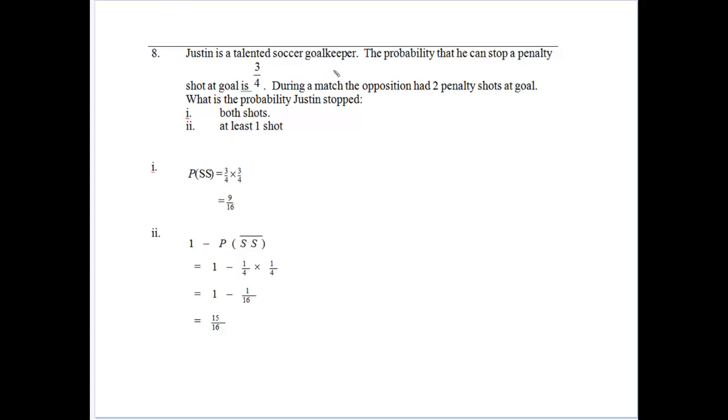This time we've got Justin being a goalkeeper and the probability that he stops a penalty shot is three quarters. And if he's in a game that has two penalty shots to stop, what's the probability that he stops both? Well, that's he stops the shot and he stops the shot. Got 9 in 16 chances of doing that.